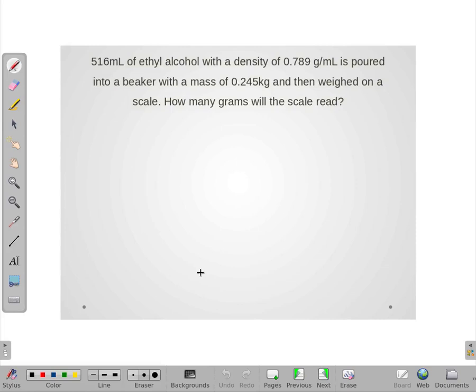516 milliliters of ethyl alcohol with a density of 0.789 grams per milliliter is poured into a beaker that has a mass of 0.245 kilograms and then is weighed on a scale. It wants to know how many grams will that scale read.